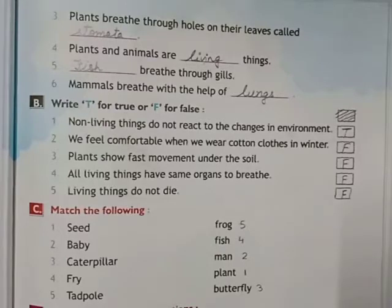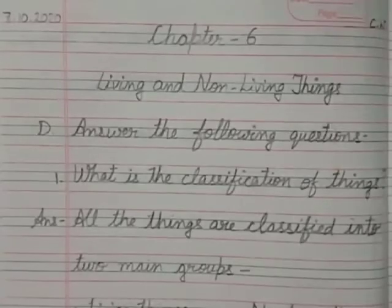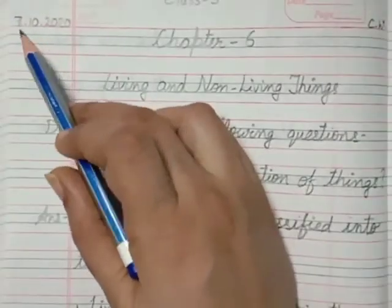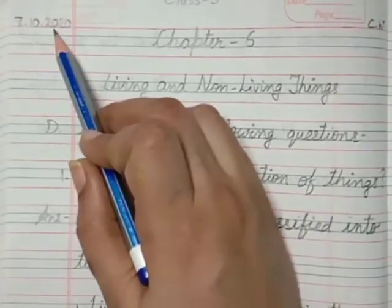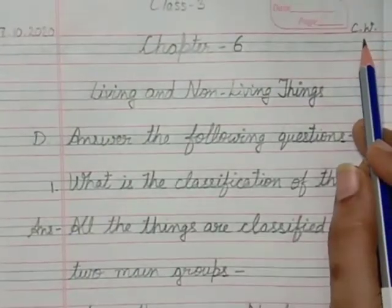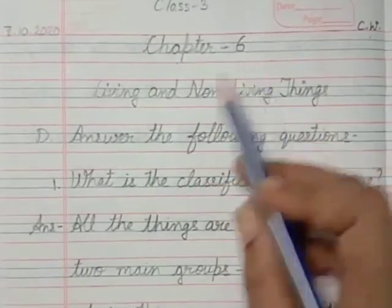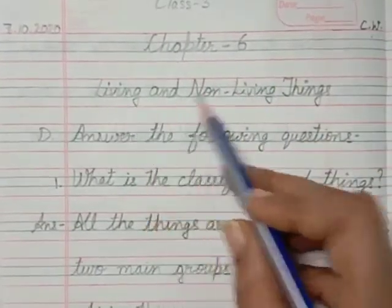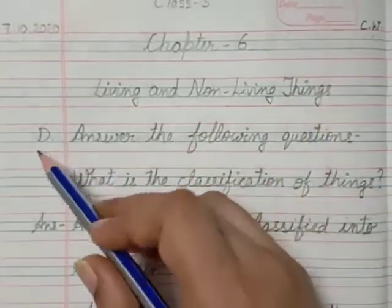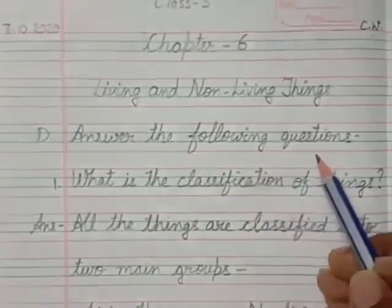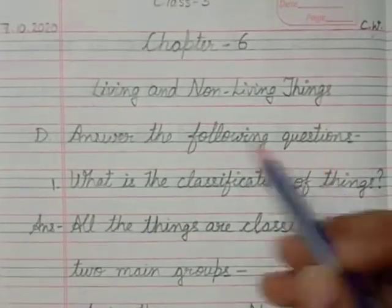Open your notebooks. First, write today's date in the top left corner, and in the top right corner write class work. Then write chapter six and the chapter name: living and non-living things. Then write part D: answer the following questions.